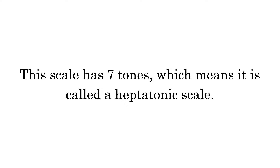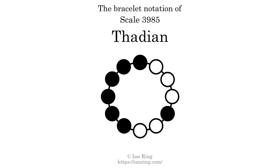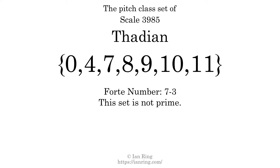This scale has 7 tones, which means it is called a heptatonic scale. This is a bracelet notation diagram of scale 3985. The shaded circles represent tones that appear in the scale, and they are read clockwise, starting at the top. The pitch class set for this scale is 0, 4, 7, 8, 9, 10, 11.